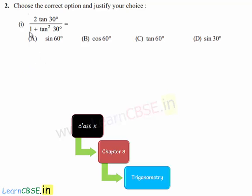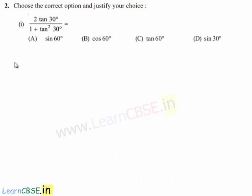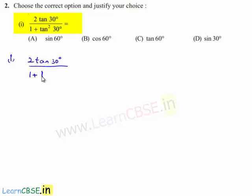Moving on to the second question. Choose the correct option and justify your choice. In the first bit, he has given 2 tan 30 degrees by 1 plus tan square 30 degrees.